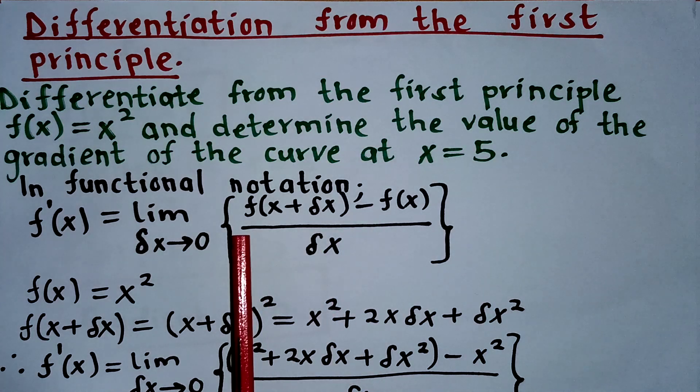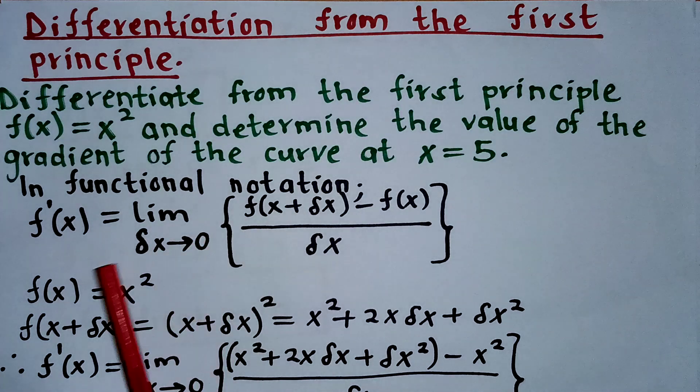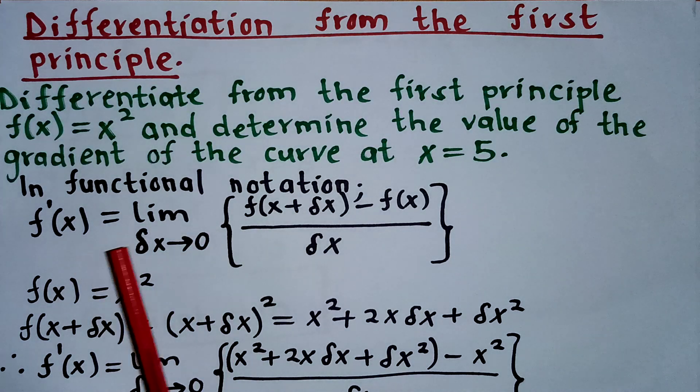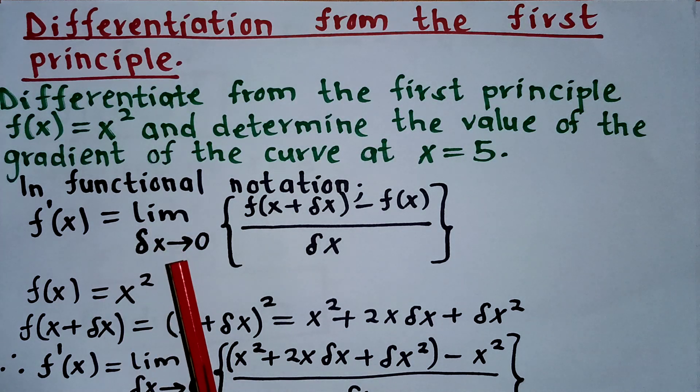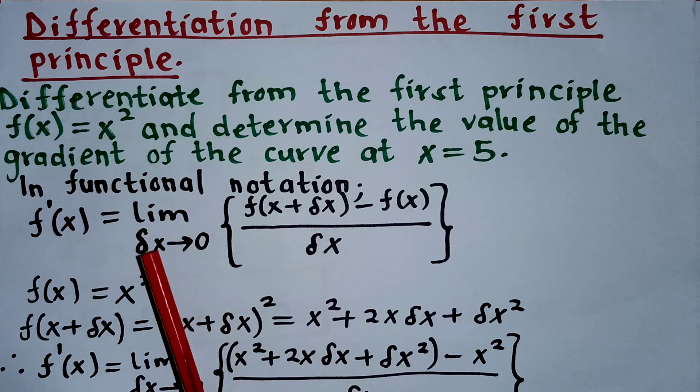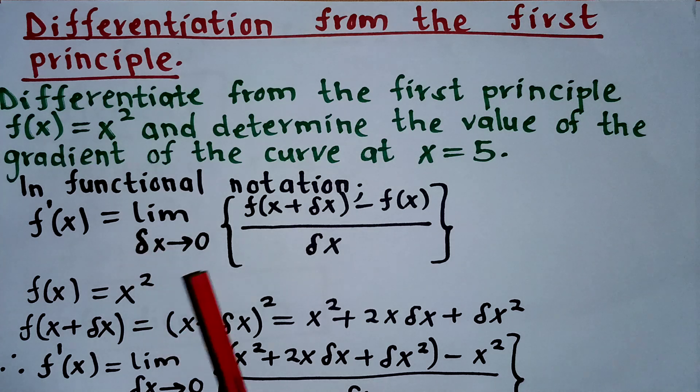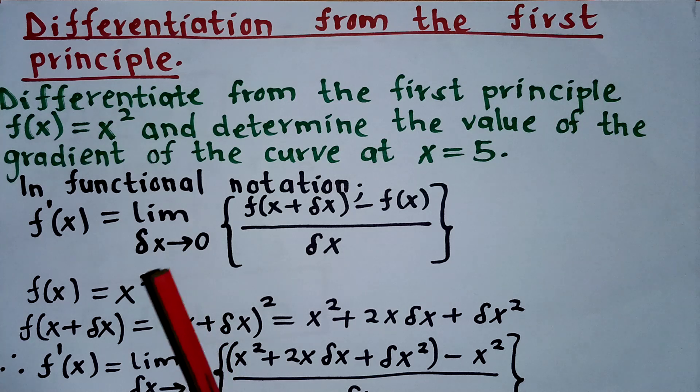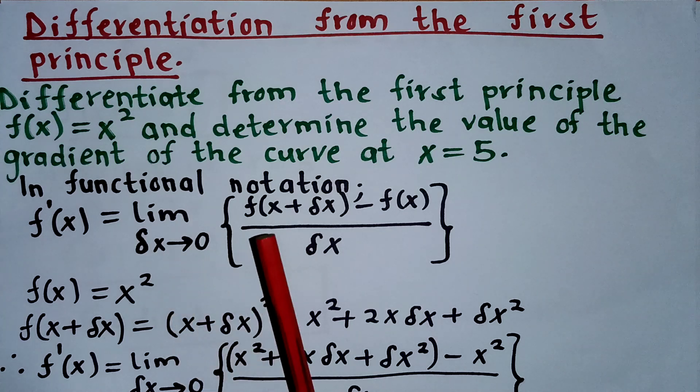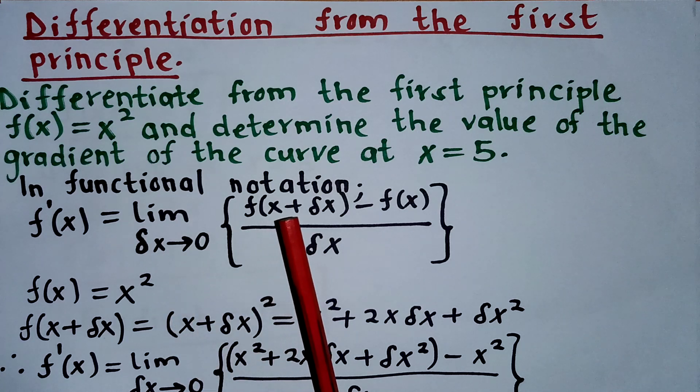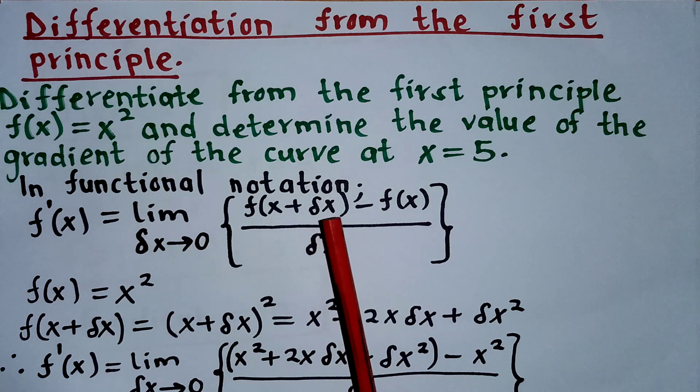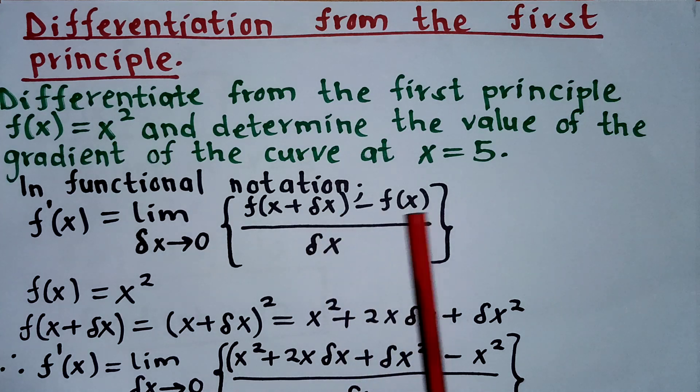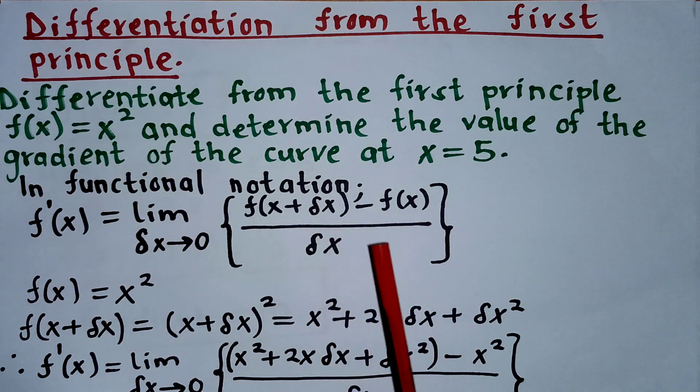So in functional notation, the first derivative of x is going to be given by the limit when the small change in x is tending to 0, that is δx, of function f(x + δx) minus function f(x) divided by δx.